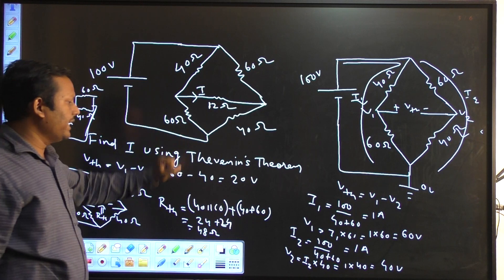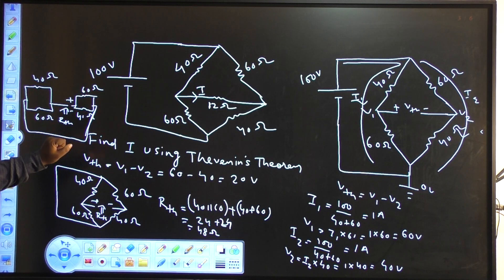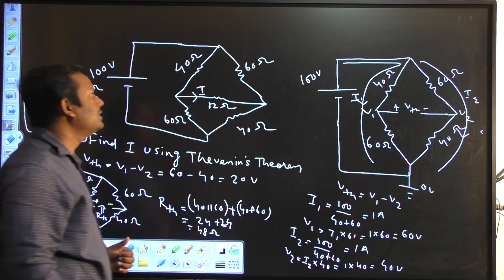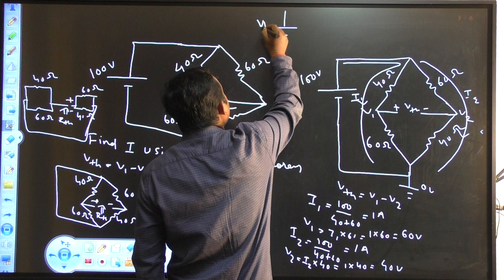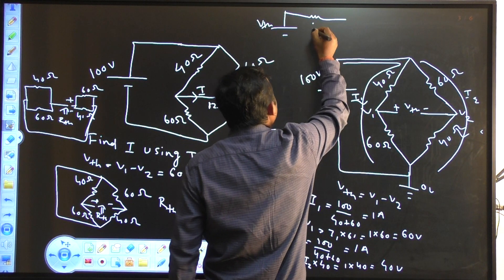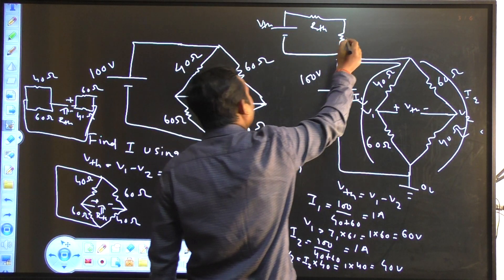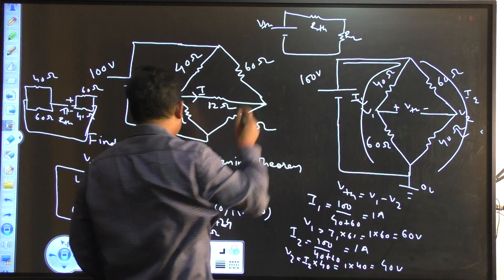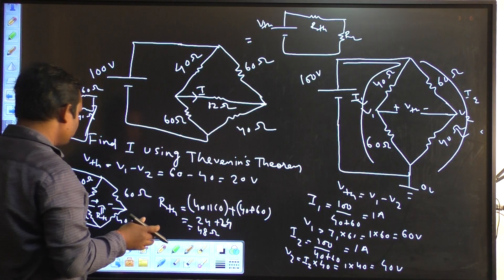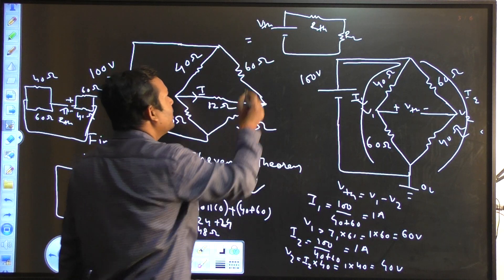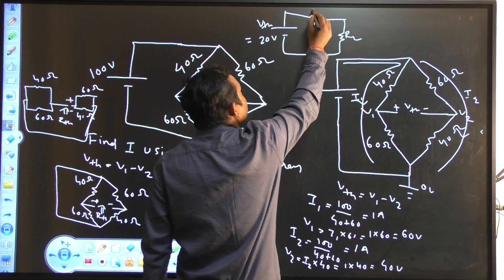Then I have to find this current I. I have found the Rth. I have to replace the entire network by Vth in series with Rth, and then connect the load in series, which is the 12 ohm resistor. Vth is 20 volt. Rth is 48 ohm. Your RL is 12 ohm. So your current I going through this 12 ohm is equal to Vth divided by Rth plus RL, which is 20 divided by 48 plus 12.